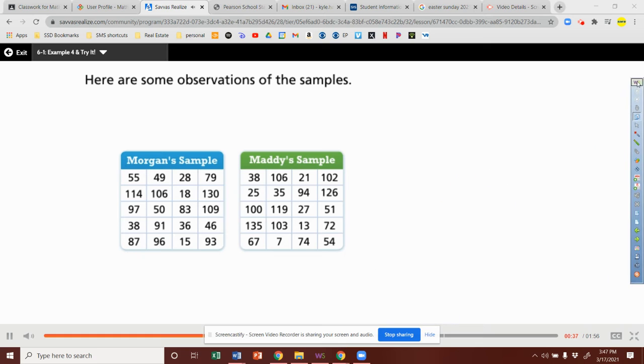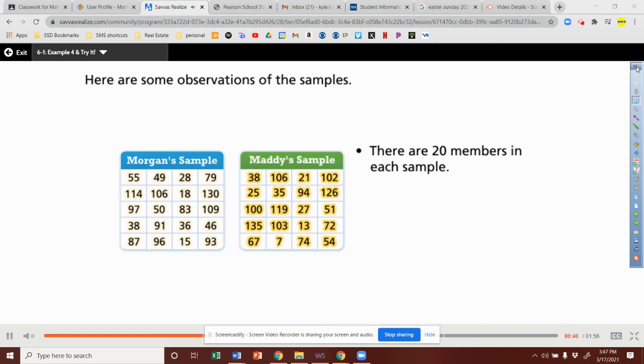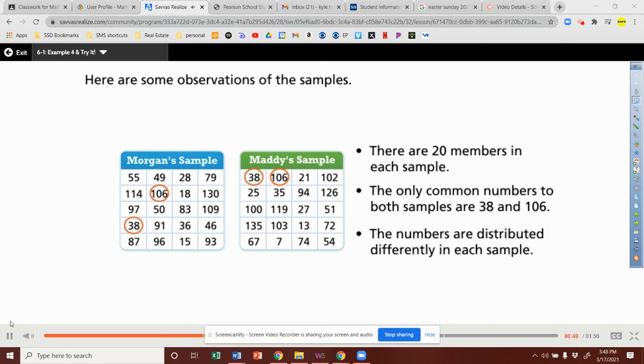Here are some observations of the samples. There are 20 members in each sample. The only common numbers to both samples are 38 and 106, and the numbers are distributed differently in each sample.